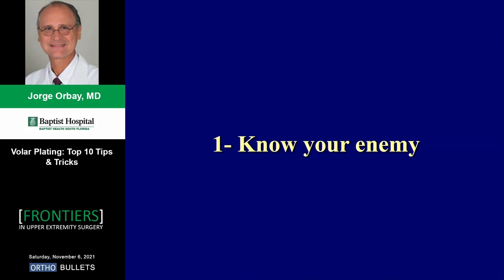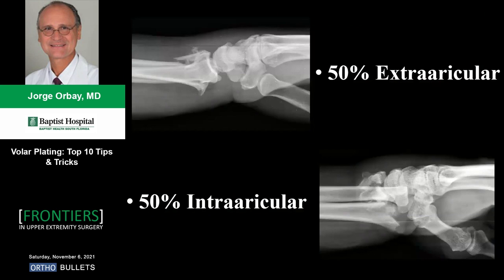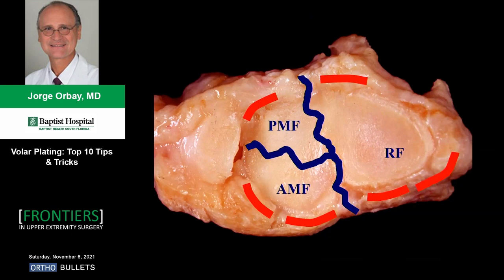I've organized this talk into 10 tips and tricks. First, we have to know our enemy: the distal radius fracture is the most common fracture of the human skeleton. Half have articular involvement, which makes them challenging. We must understand the anatomy of fracture patterns — most typically the articular surface breaks into three fragments, with fracture lines exiting wherever there are no ligaments originating or inserting.